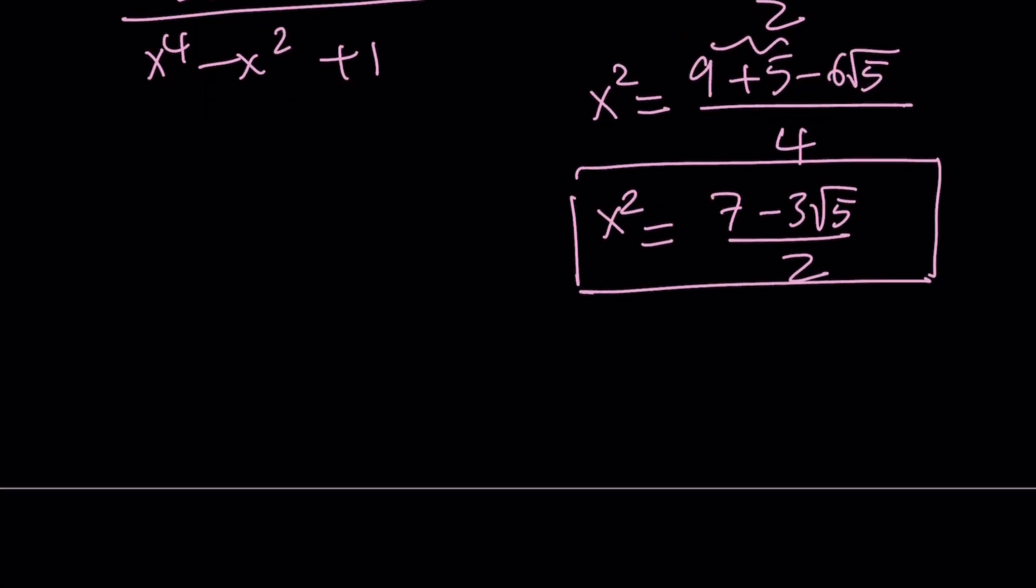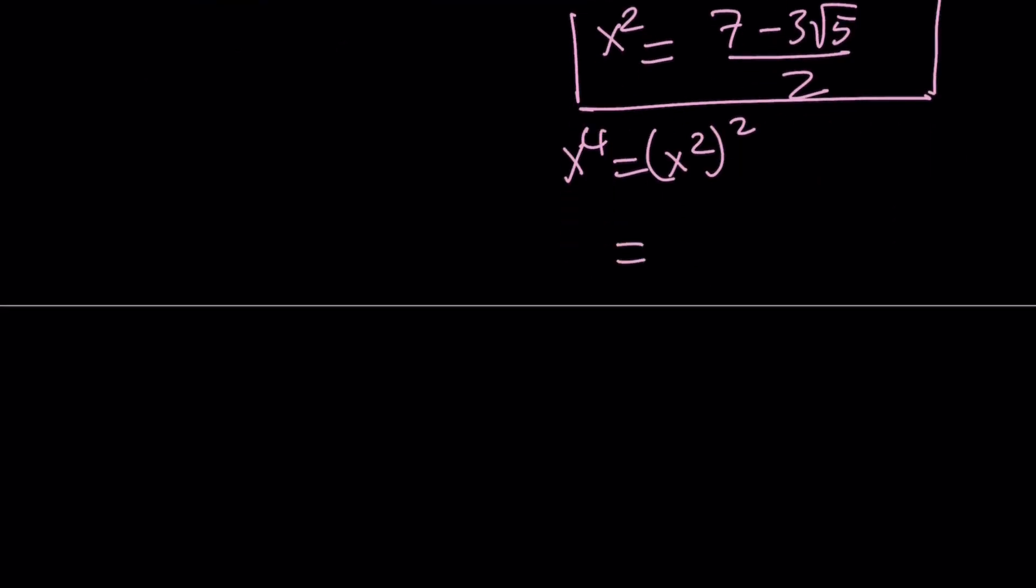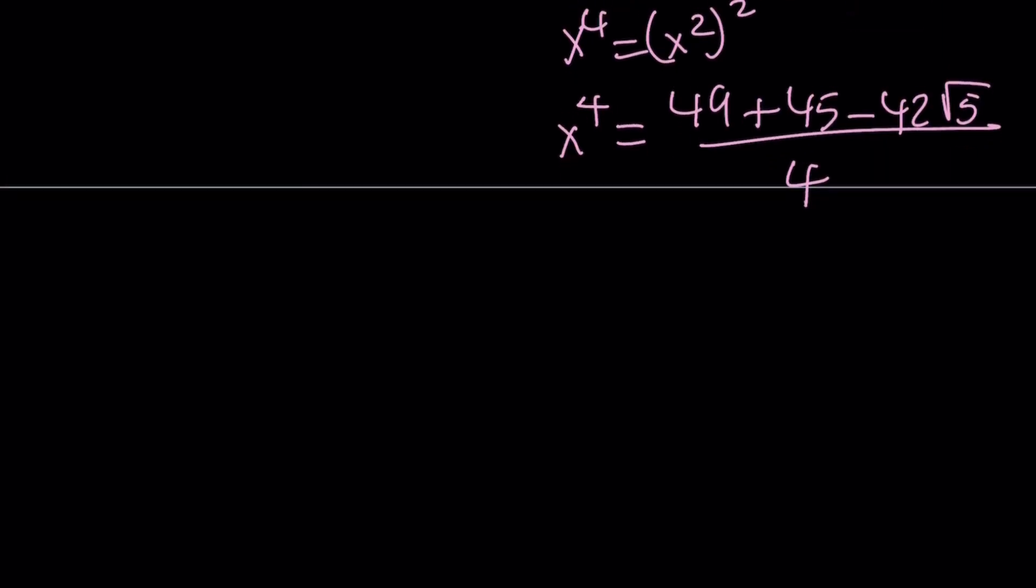And then what about x to the fourth? It's just going to be x squared squared. So we can go ahead and square x squared. That is going to give us 49 plus 9 times 5, which is 45, minus 7 times 3 times 2 times root 5, which is going to be 42 root 5. And that's going to be divided by 4. Because every time, we square the 2 at the bottom.